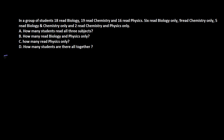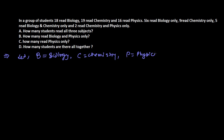Let B represent biology, C represent chemistry, and P represent physics. The total number of biology learners is 18, the total number of chemistry learners is 19, and the total number of physics learners is 16.